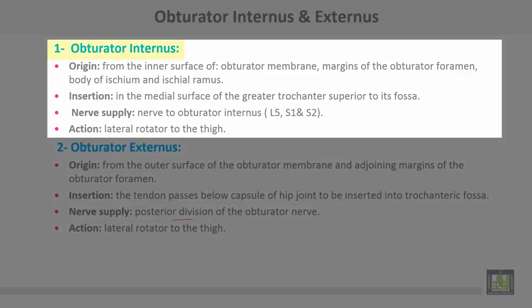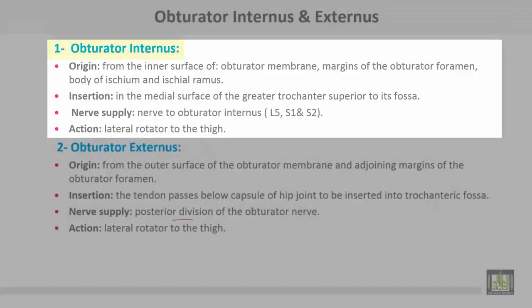Obturator internus takes origin from the inner surface of the obturator membrane, margins of the obturator foramen, the body of the ischium, and the ischial ramus. Insertion on the medial surface of the greater trochanter, superior to the trochanteric fossa. Nerve supply: nerve to obturator internus from L5, S1 and S2. Action: lateral rotation of the thigh.